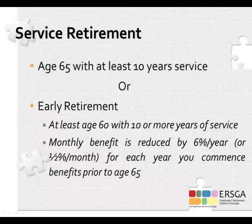A normal service retirement allows a PSERS member to begin receiving a monthly benefit as early as the first day of the month on or after their 65th birthday, provided they have at least 10 years of creditable service. A member may also take an early retirement at age 60 but before age 65, with at least 10 years of creditable service. Under early retirement, the monthly benefit is reduced at 6% per year — prorated to 1.5% per month — for every year the member retires before age 65.